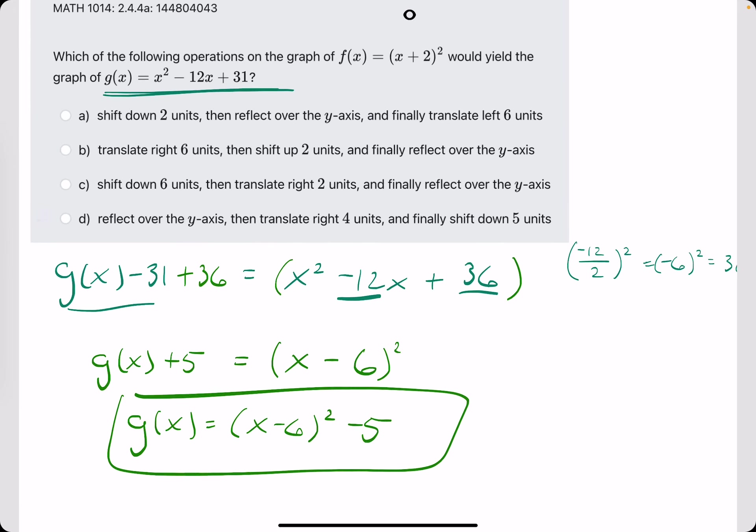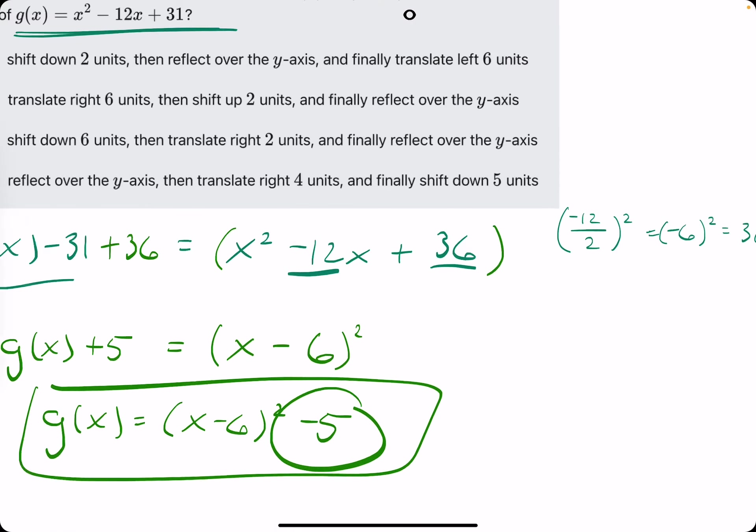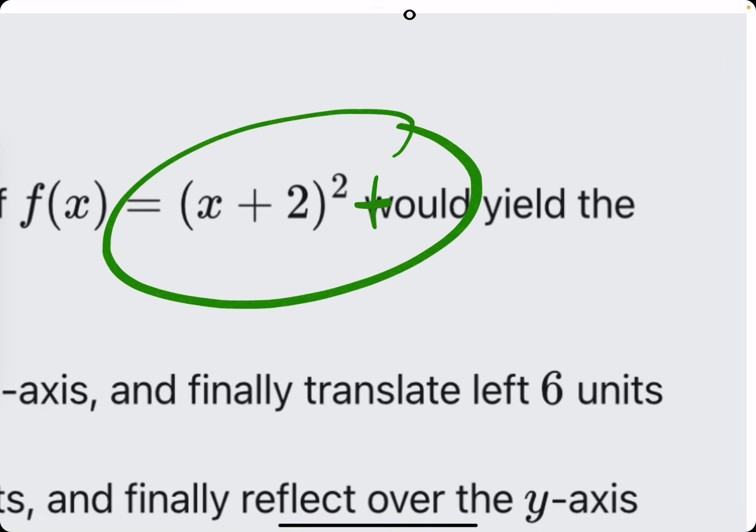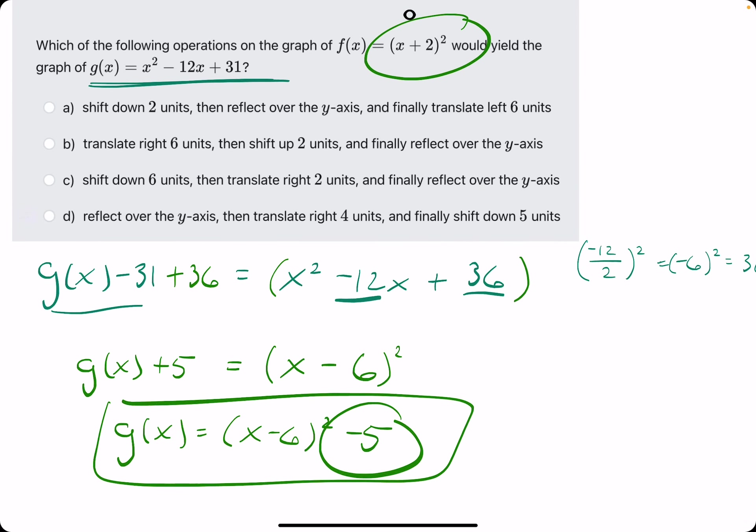So now we get g(x) by itself by subtracting 5, so we have x minus 6 squared minus 5. Now at this point in the problem we can hopefully identify the right answer again just by recognizing what the shift is up or down. The shift up or down is 5. We're going down 5 from the original function because the original function had no shift up or down. There was no plus 7, there was no minus 8 on the outside of the parentheses, and so there was no shift up or down. So we've gone down by 5. Do we see any answer that talks about shifting down 5 units? Yes, just option D.